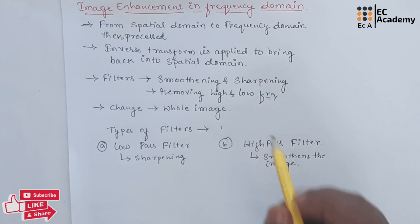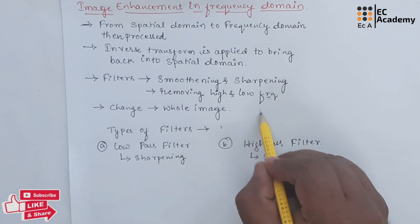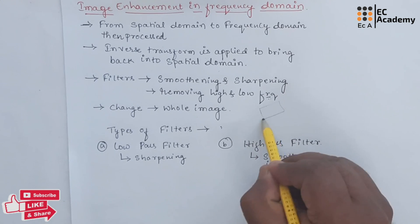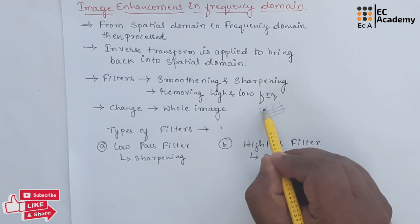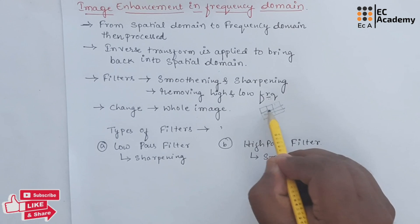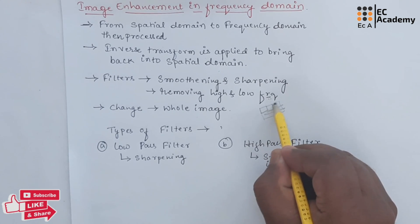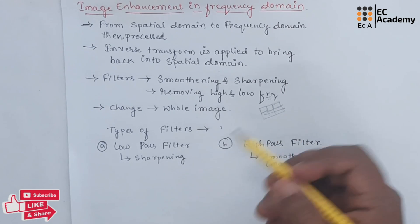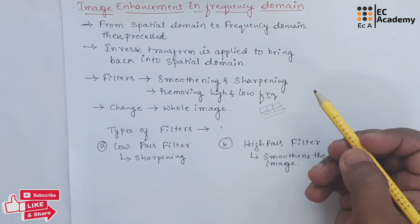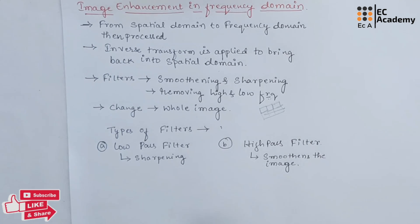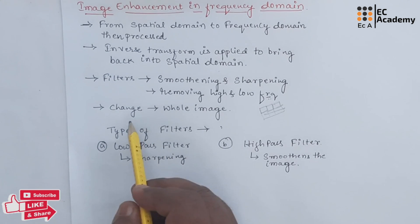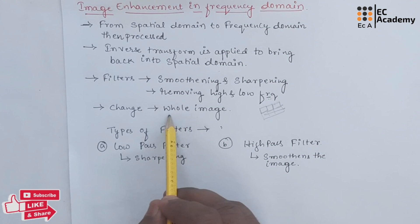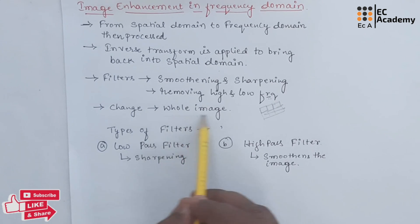In spatial domain, manipulation was done by considering one pixel at a time — we would manipulate one pixel, then the next pixel, then the next pixel in the spatial domain image enhancement. In Frequency Domain, once we apply the filter, the change will occur on the entire image at a time.